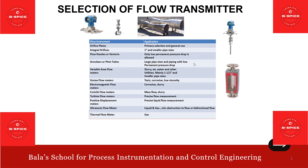Variable area flow meters: rotameter is used for slurry, air, water, and other utilities — mainly for 1.5 inch and smaller pipe size. Vortex flow meter is used for toxic, corrosive, and low viscosity applications.